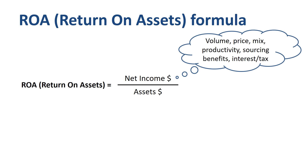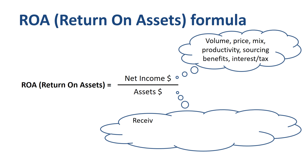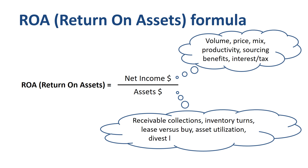Assets can be reduced by shorter credit terms to customers and improved receivables collections, increasing inventory turns, making selective lease versus buy decisions, improving the asset utilization of property, plant and equipment, or divesting lower margin business units or product lines.